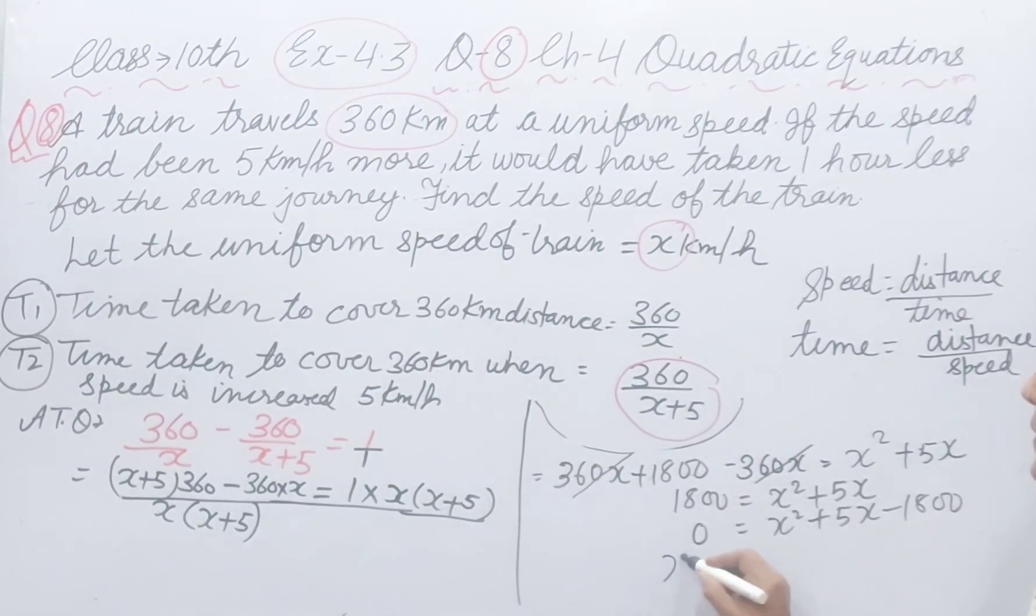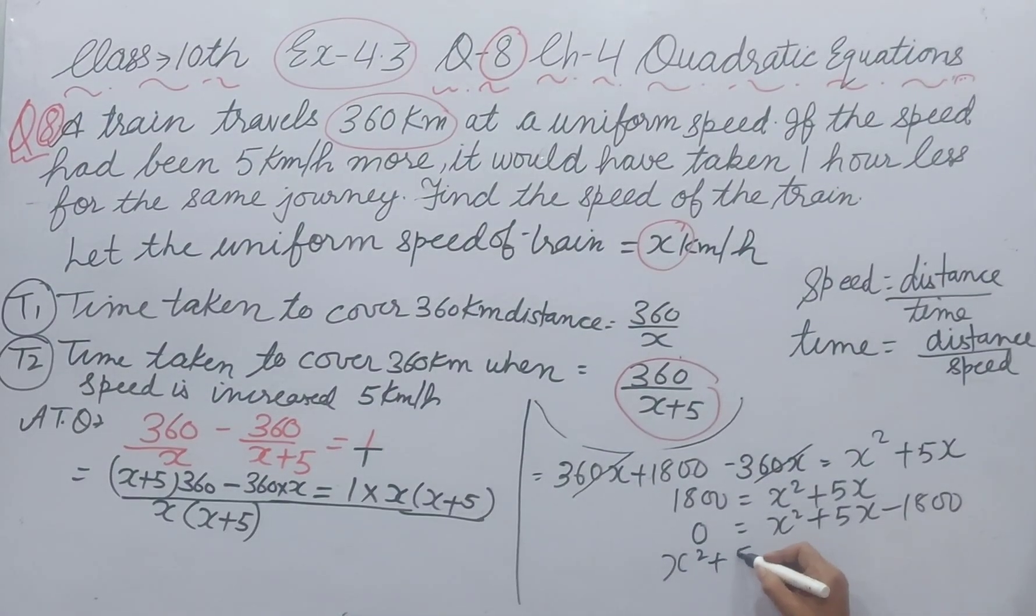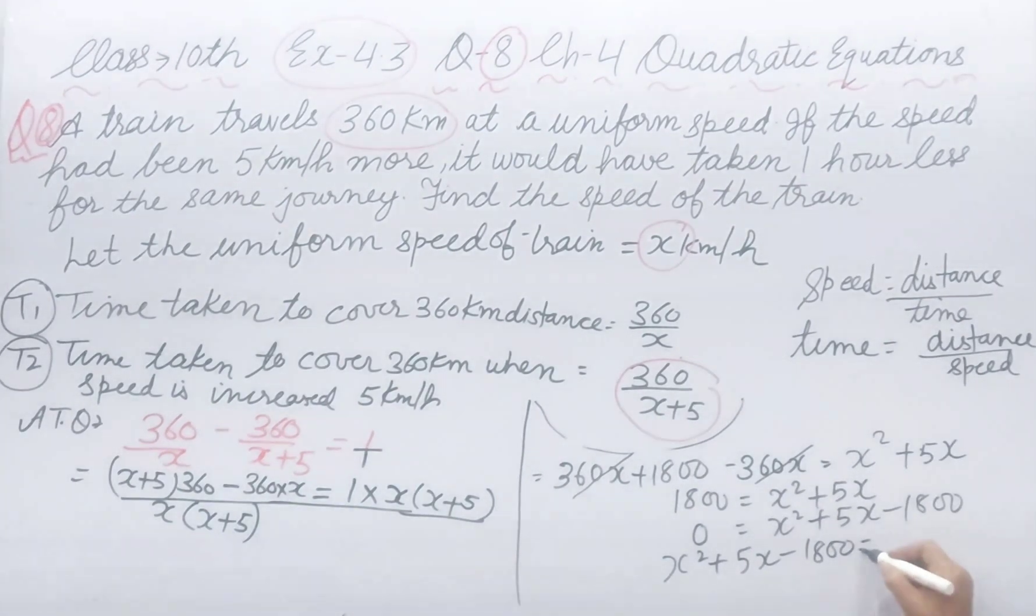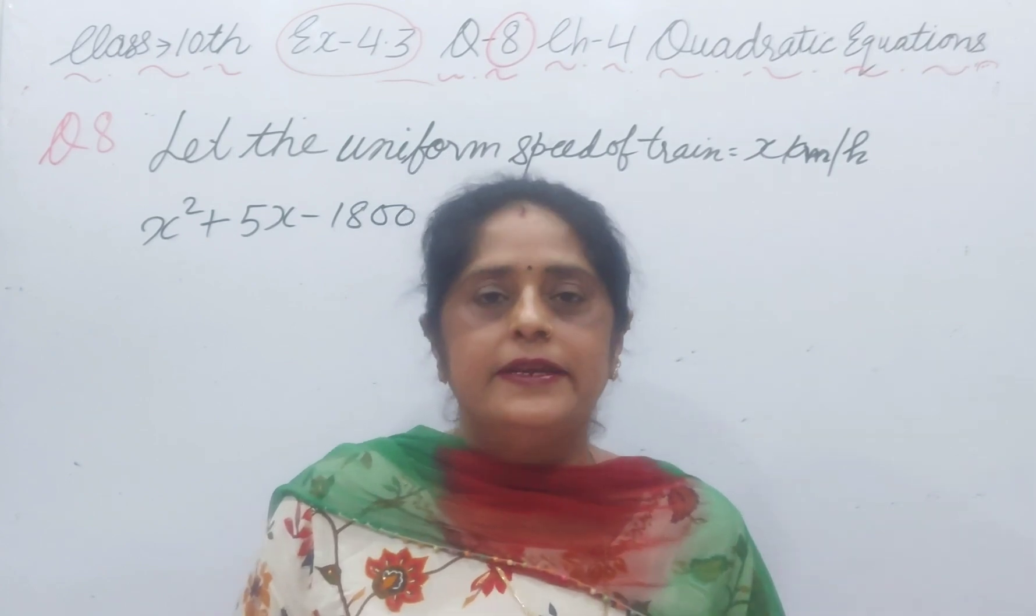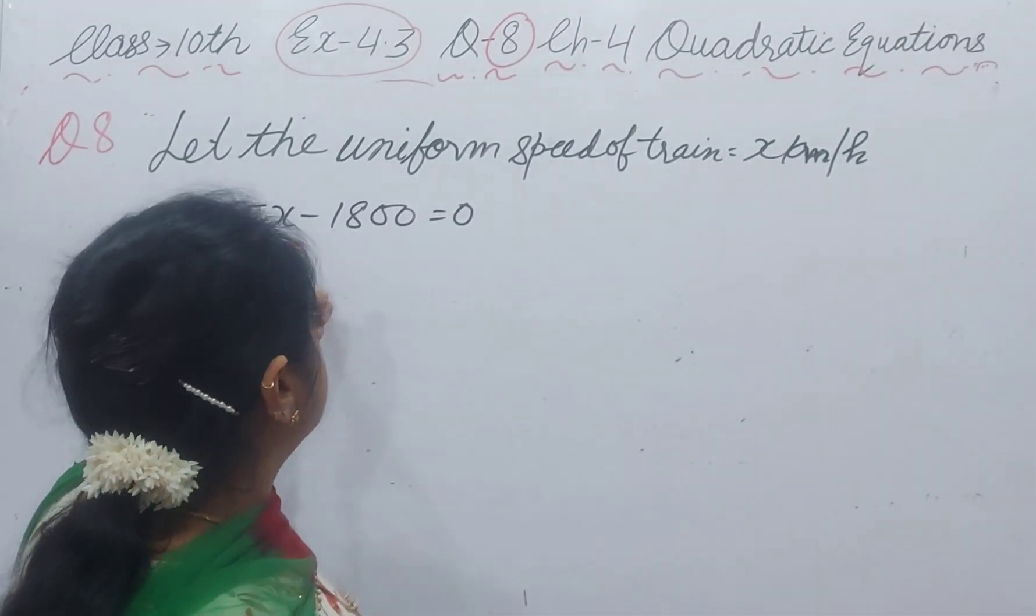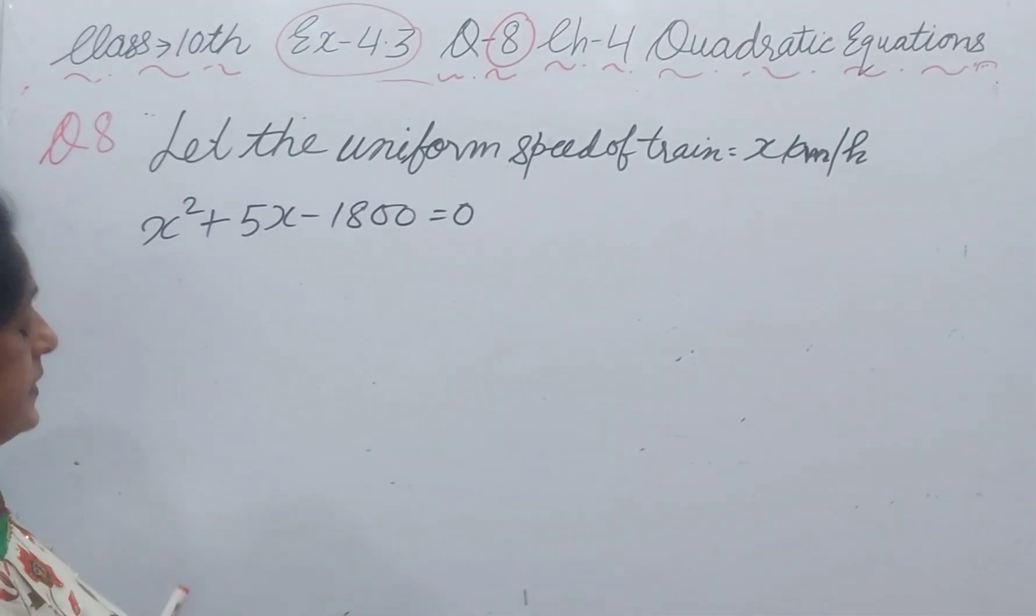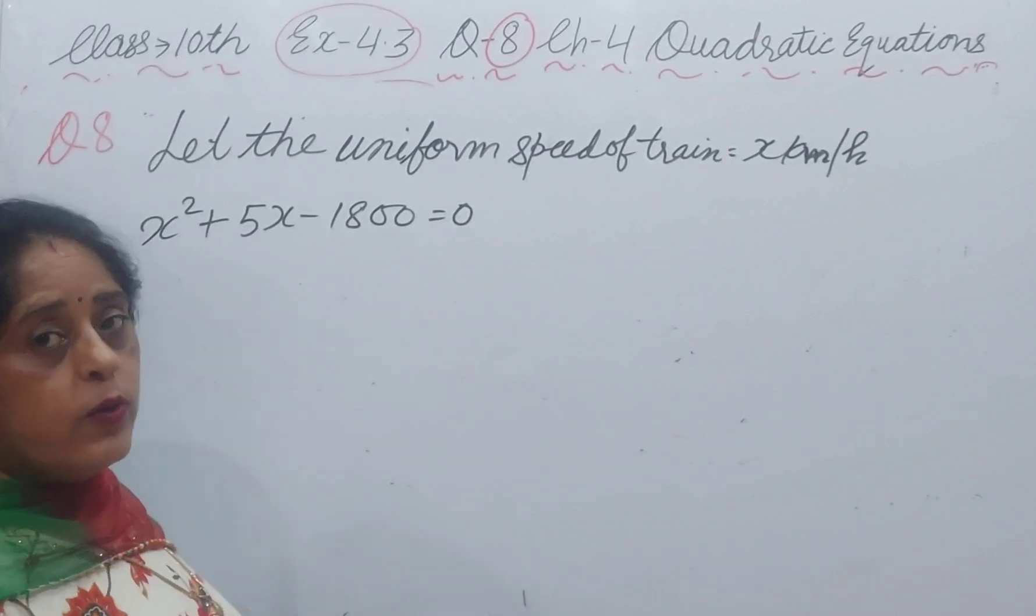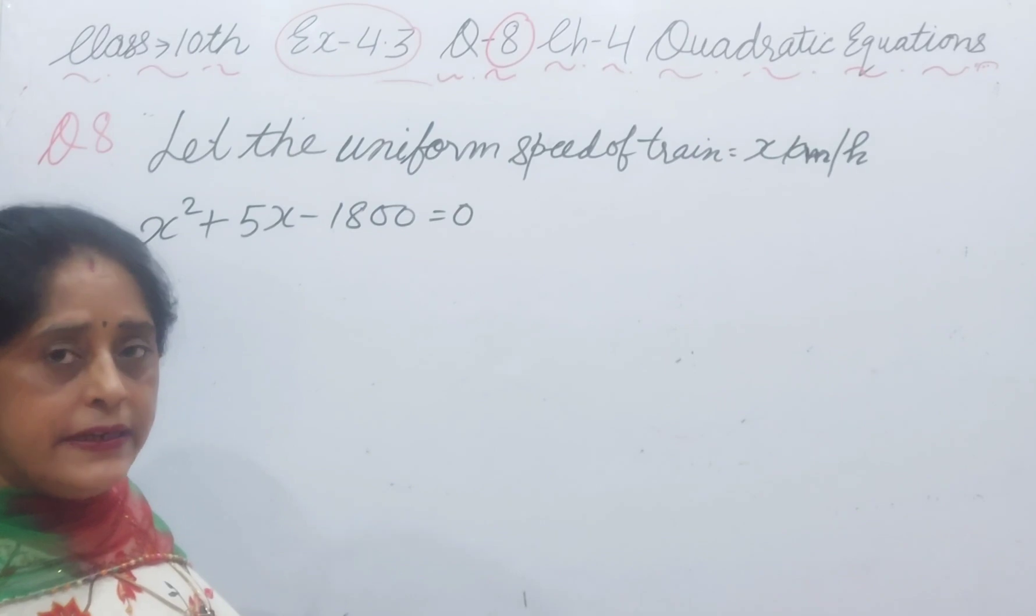Or you can write x square plus 5x minus 1800 equal to 0. Quadratic equation. You can solve it by quadratic formula or completing the square method. But I will use split the middle term.